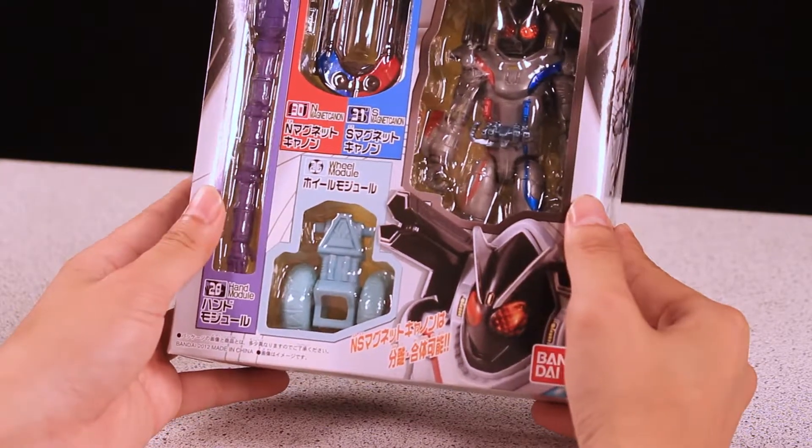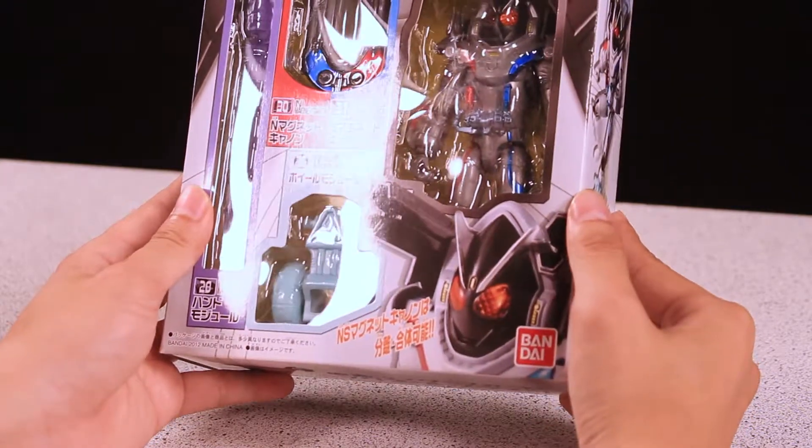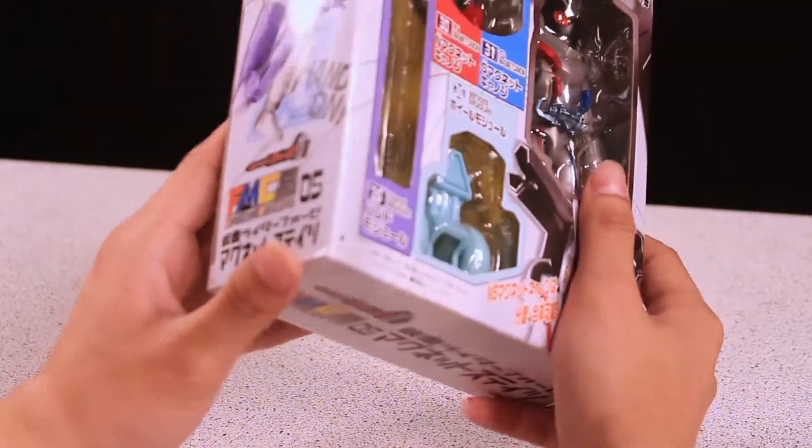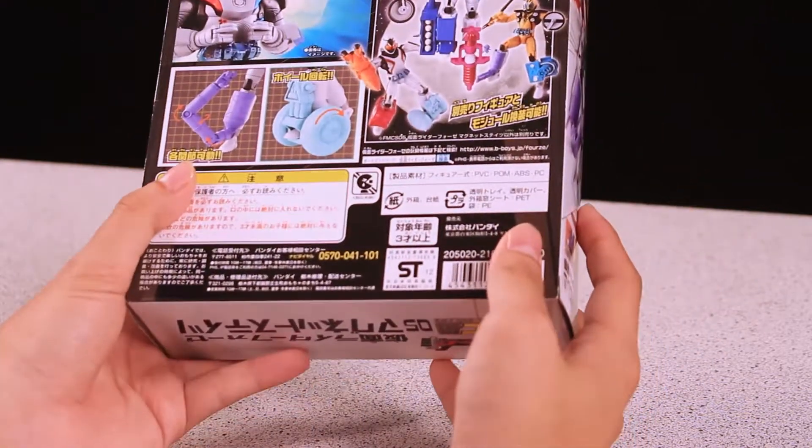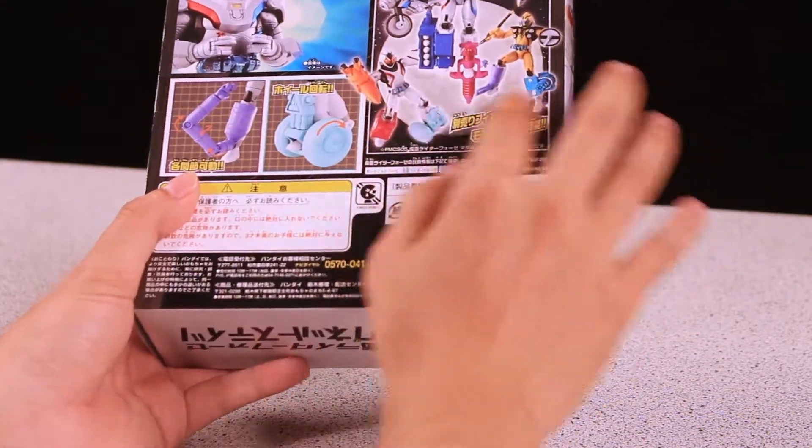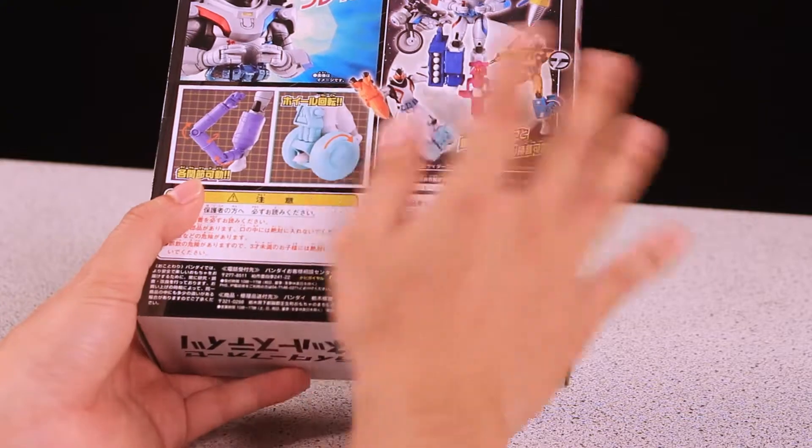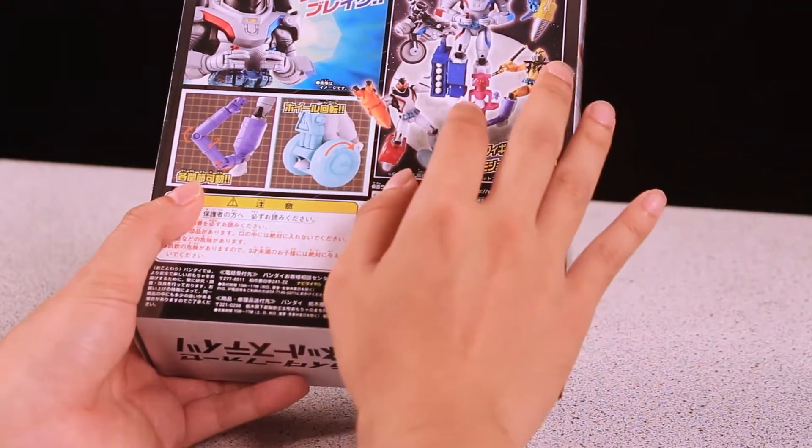So here is the box, as you can see it's a pretty nice box. Here is the side of the box, here is the other side, here is the back of the box. You can see a bunch of accessories that will come with the other purchases.